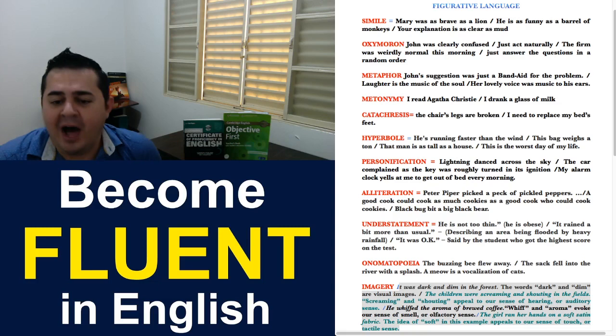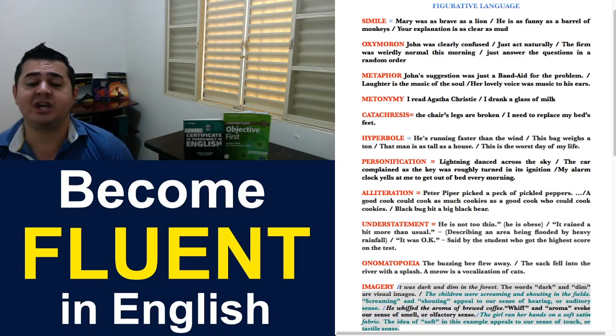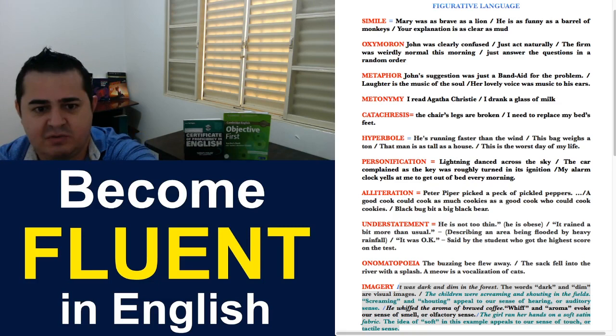The girl ran her hands on a soft silken fabric. The idea of soft in this example appeals to our sense of touch or tactile sense. So, in other words, we're using our senses. And that's called in English, imagery.